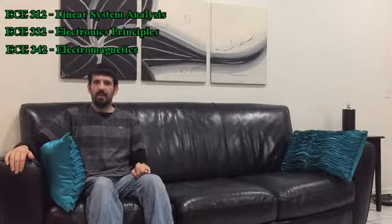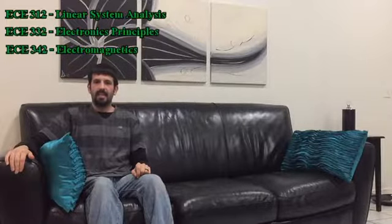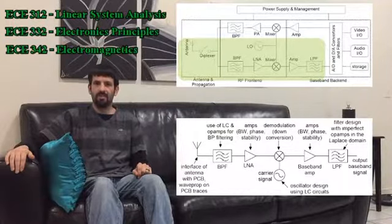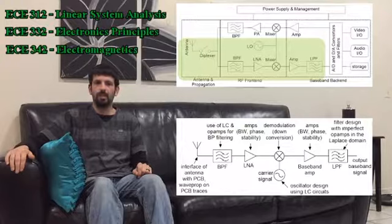Welcome back to another episode of 7 Minutes of Circuits. My name is Michael Siebel and I'm a junior in the electrical engineering program at CSU. I'm currently enrolled in ECE 312, ECE 332, and ECE 342. Today we will discuss the signal receiving circuit of a radio system and how it relates to concepts learned in each of the three junior year ECE courses.